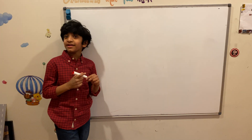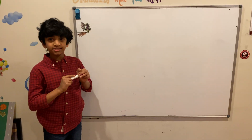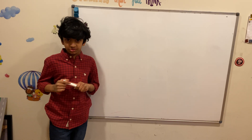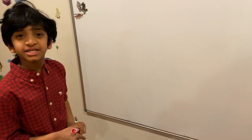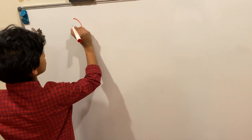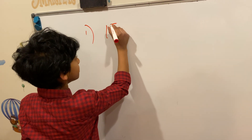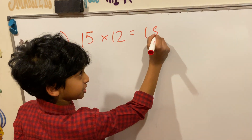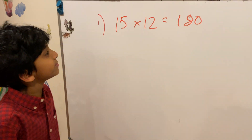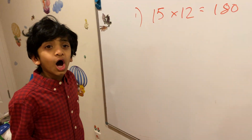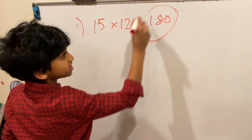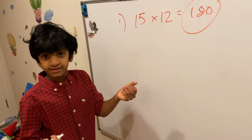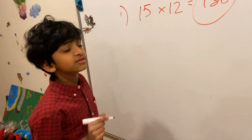Hey guys, I have another quick trick for you — this time it's a trick to learn how to verify if your answer is correct. So the first example is 15 times 12 which equals 180. Let's verify if this answer is correct. Maybe we did a miscalculation or something. Let me tell you the trick now to verify it.